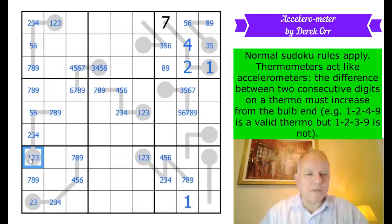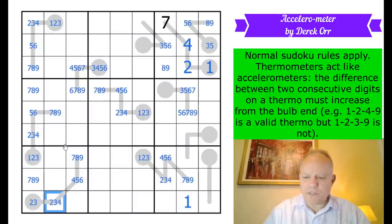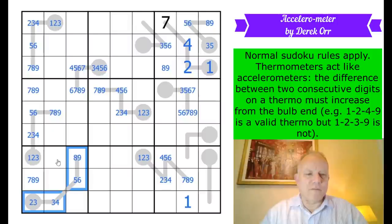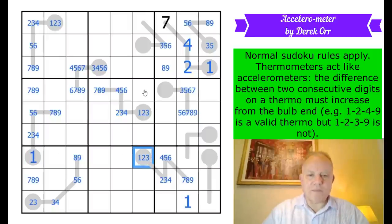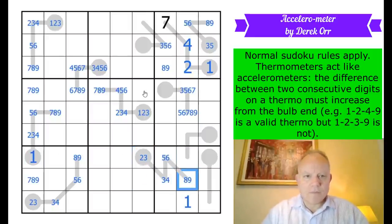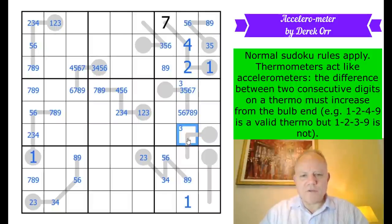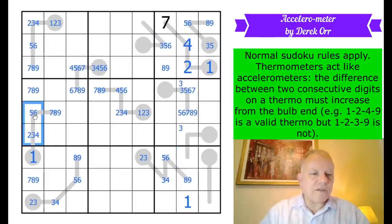I think we can all do that if we bother to ask ourselves that simple question. That tells us where 1 goes in column 1. It's got to be here. Hang on. Ruling 1 out of there rules 2 out of here. And that does rule 4 out of here and 7 out of here. So that did run all along the thermo. We get this as a 1, which does very little. Oh, it stops this being a 1. And that runs along this thermo. Now, where does 3 go? Well, it could be there or it could be there.